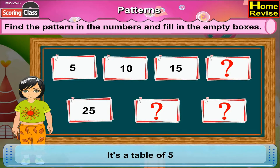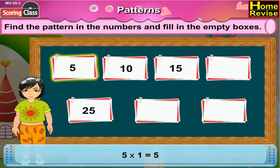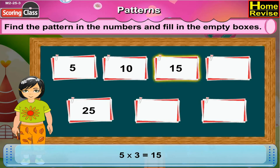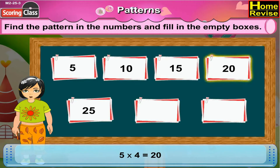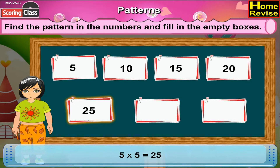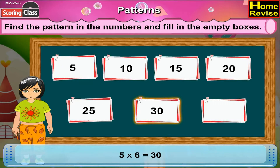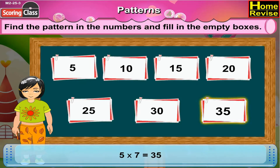it's the table of 5. As 5 ones are 5, 5 twos are 10, 5 threes are 15. The next box would have 5 fours are 20. Next, it is 5 fives are 25. The next 2 boxes will have the numbers 5 sixes are 30 and 5 sevens are 35.